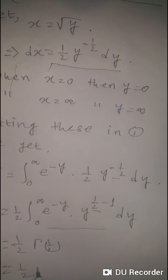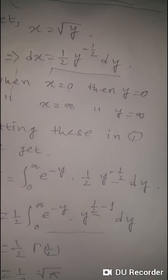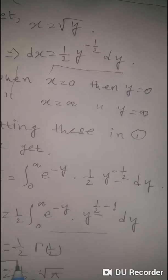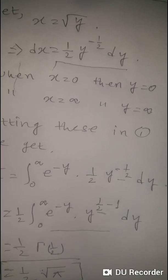This equals half times gamma of half, which equals root pi over 2. This is the solution of the given problem.